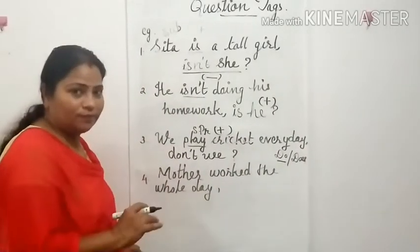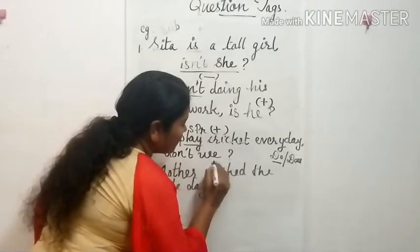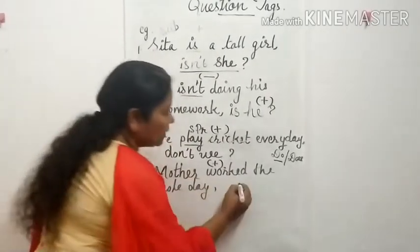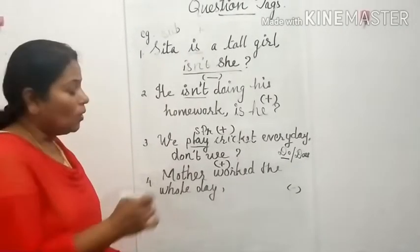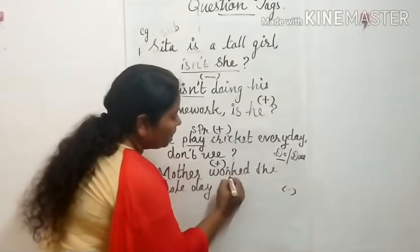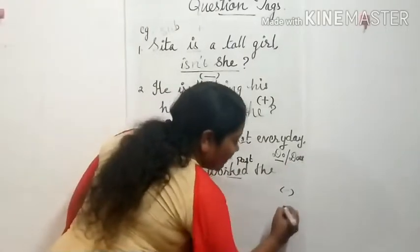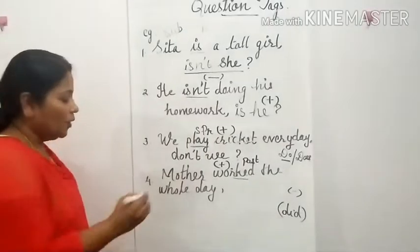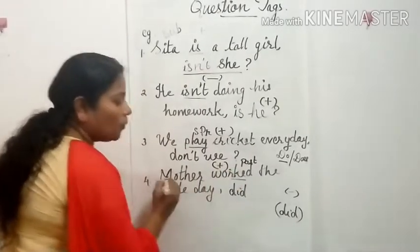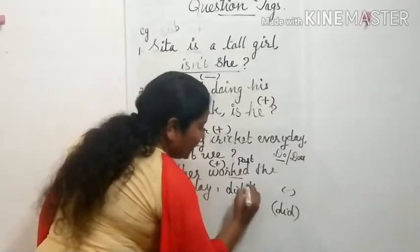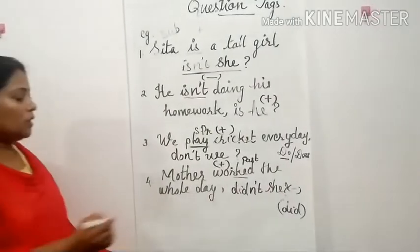Fourth example: 'Mother worked the whole day.' This is a positive sentence, so the question tag will be negative. There is no helping verb, but the verb 'worked' is in past tense — the '-ed' form. When the verb is in past tense, we use 'did' in the question tag. Since the sentence is positive, the question tag is negative: 'didn't she?' So: 'Mother worked the whole day, didn't she?'